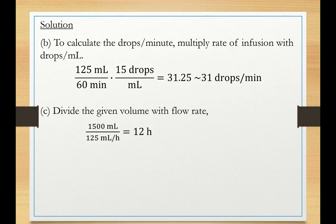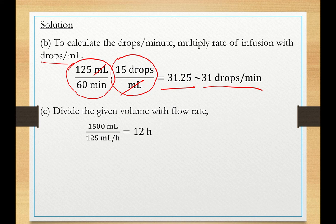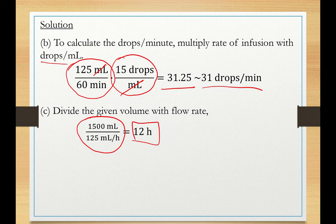To calculate drops per minute, multiply the infusion rate by the drops per ml calibration of the infusion set: 125 ml/hr × (1 hr/60 min) × 15 drops/ml = 31.25 drops/min, rounded down to 31 drops per minute. To find infusion time for 1500 ml, divide the volume by the flow rate: 1500 ml ÷ 125 ml/hr = 12 hours.